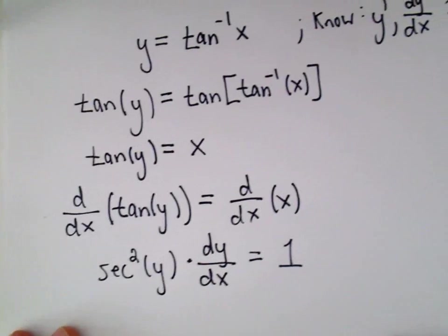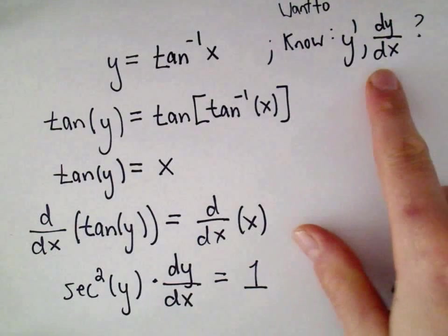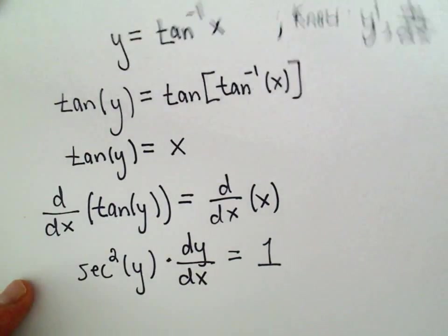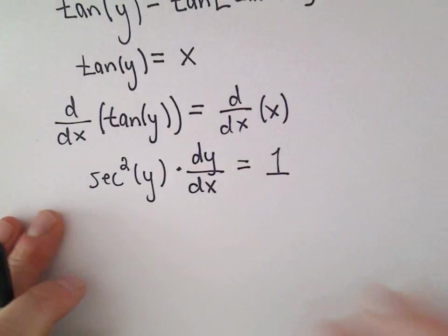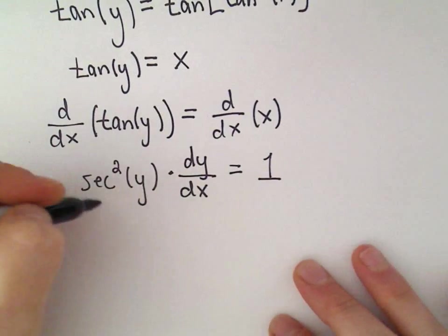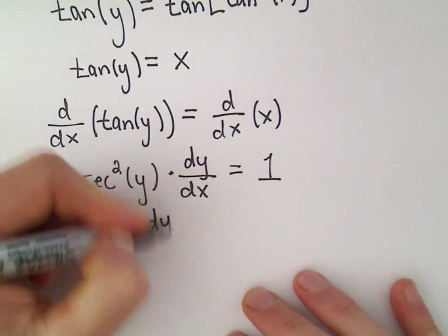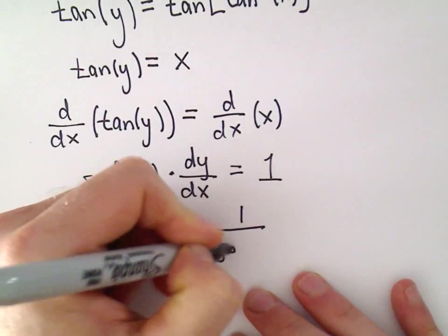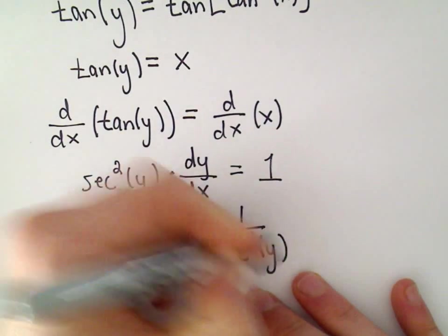Okay, hey, great. Again though, we're trying to figure out the derivative, right? That's what we want to know. We want to know a formula for dy over dx. Well, all we have to do in this case, then, is just divide both sides by secant squared. So we'll get dy over dx equals 1 over secant squared of y.